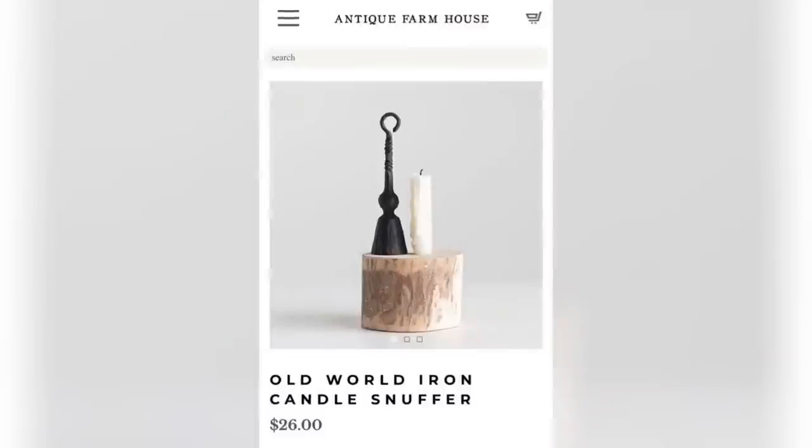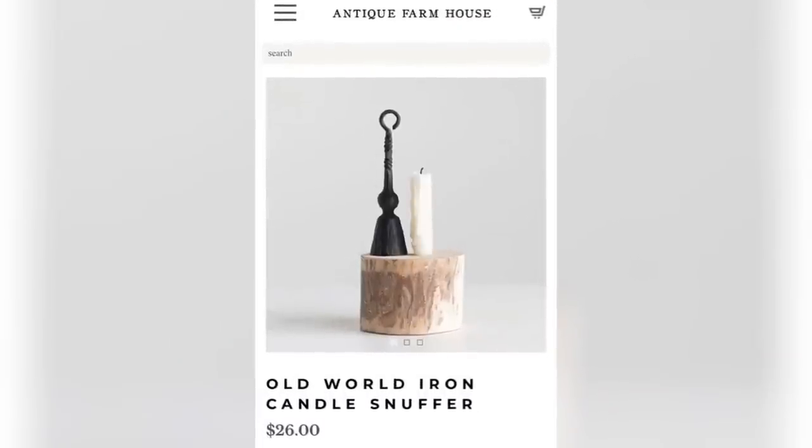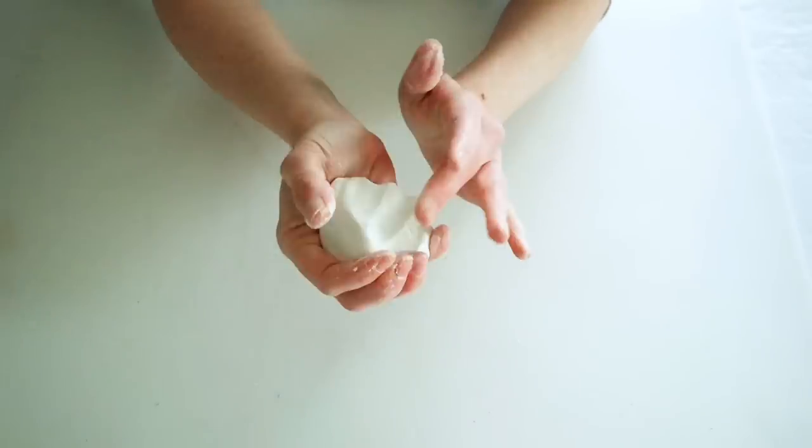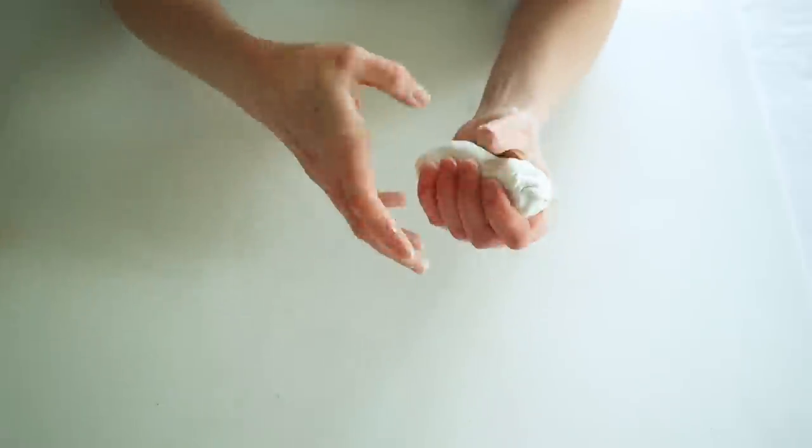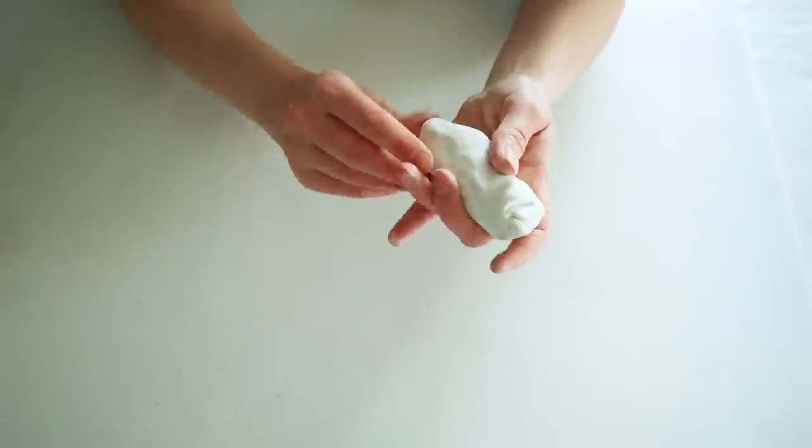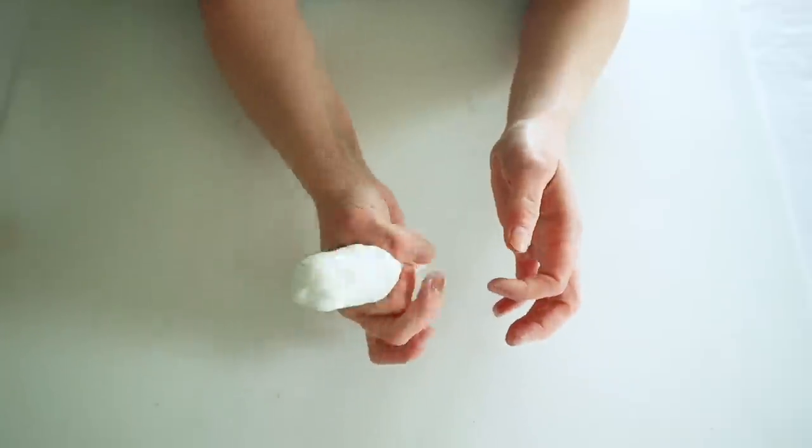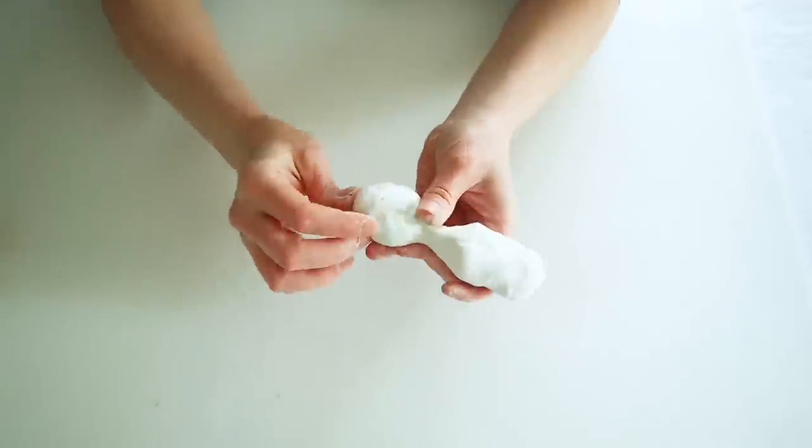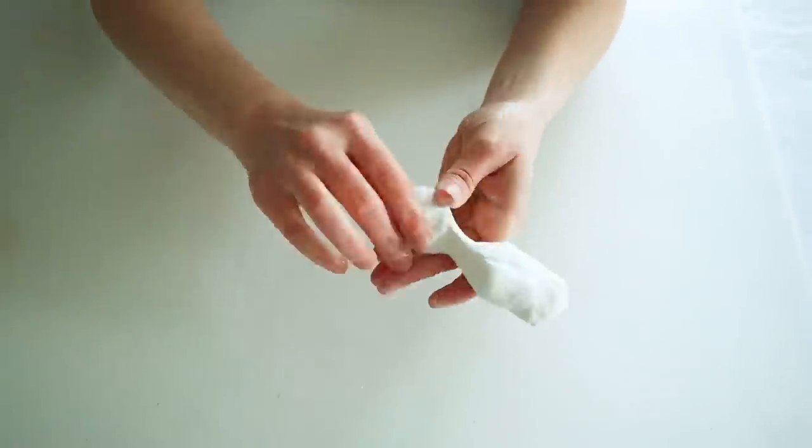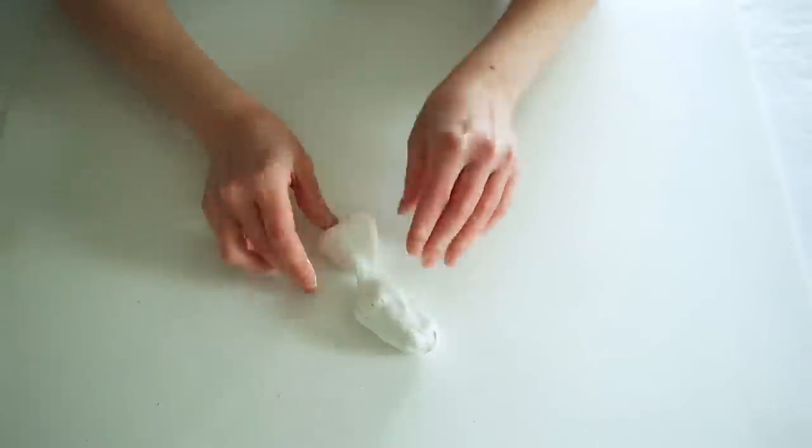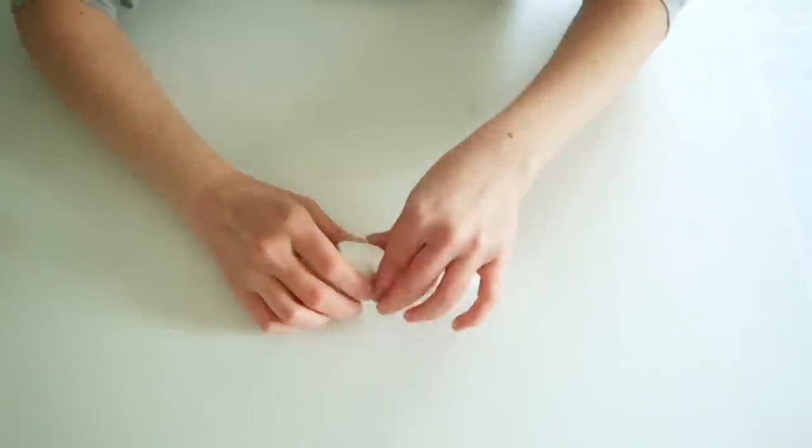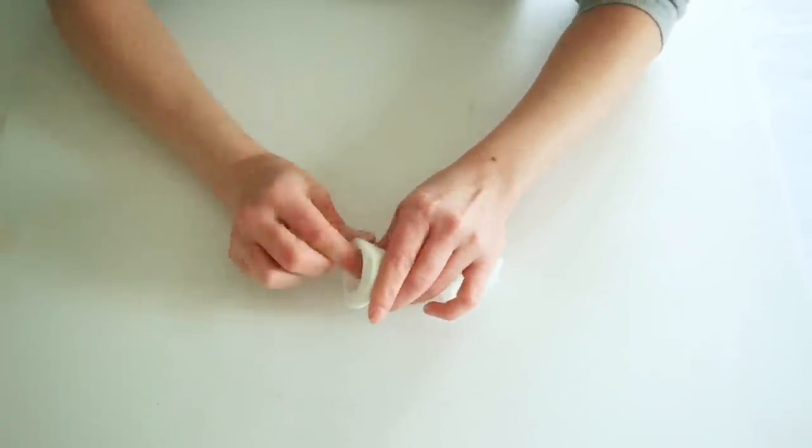For this next project, I thought this Old World Iron Candle Snuffer from Antique Farmhouse was absolutely adorable, and I knew it would be super easy to make with some air-dry clay. So I'm once again grabbing a nice chunk of my air-dry clay, and I'm gonna start shaping this at the bottom, where it kind of looked like the bottom of a bell. So I'm just doing that general shape, using my finger to push the clay up in there to make the bottom of the candle snuffer, and I really just kept working with it until I was happy with the shape of it.